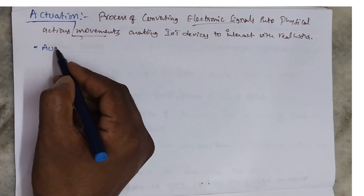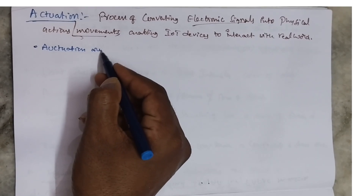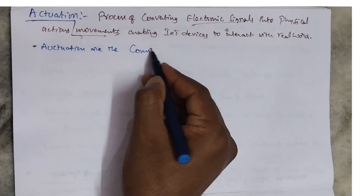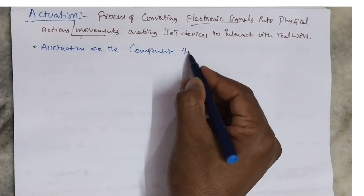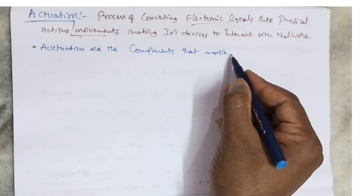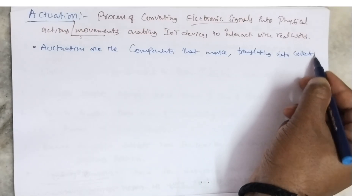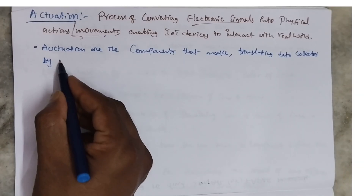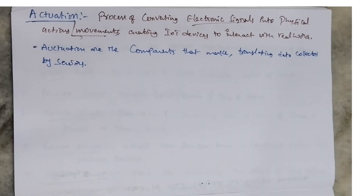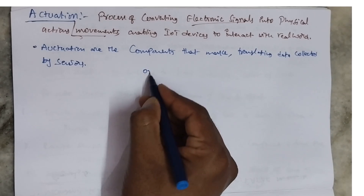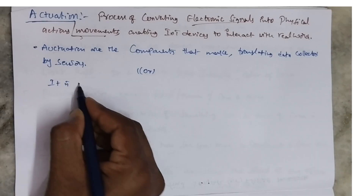For example, if you press any key, based on that key the corresponding action that has to be performed is also called activation. Activations are components that make this happen, translating the data collected by sensors. That process is called activation.